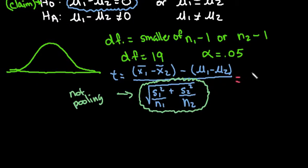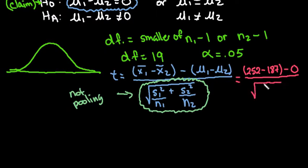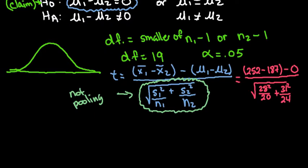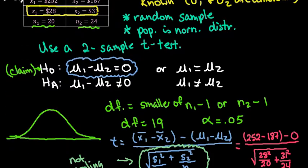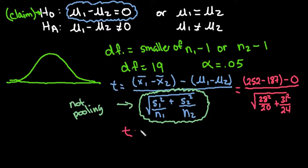Let's plug in our numbers to show the work. Our x̄1 is 252, x̄2 is 187, and we subtract zero because we said there is no difference. In the denominator we have 28² divided by 20, plus 31² divided by 24. So x̄1 minus x̄2 equals 252 minus 187, divided by the square root of (28²/20 + 31²/24). I'll use the calculator to find the t-statistic and p-value.